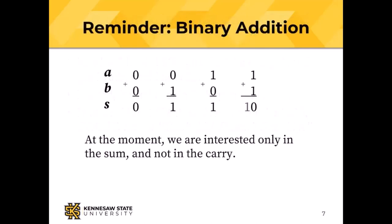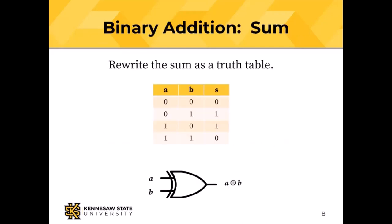We looked at binary addition earlier. If we focus only on the sum — zero plus zero is zero, zero plus one is one, one plus zero is one, one plus one is zero (with a carry) — that sum column gives us zero, one, one, zero. That's the truth table for exclusive OR, which means we can use an XOR gate to produce the sum part of a binary addition.